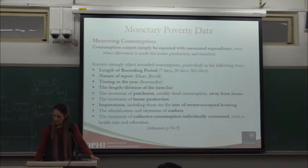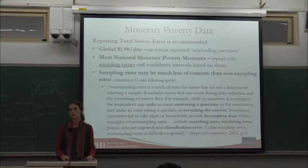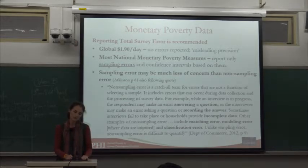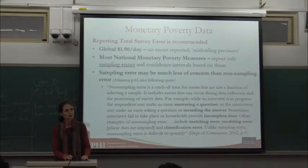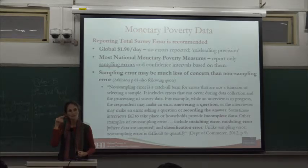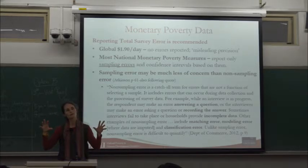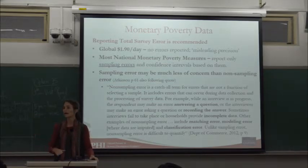As we put this aggregate together, we're working with data that are quite complex. One new idea gaining ground — and which the Atkinson report may highlight — is the need for national and World Bank poverty measures to report total survey error. At the moment, the global $1.90 a day does not report standard errors, even sampling errors. Most national poverty measures report sampling errors, but the magnitude of non-sampling measurement error may be much greater than the magnitude of sampling error.